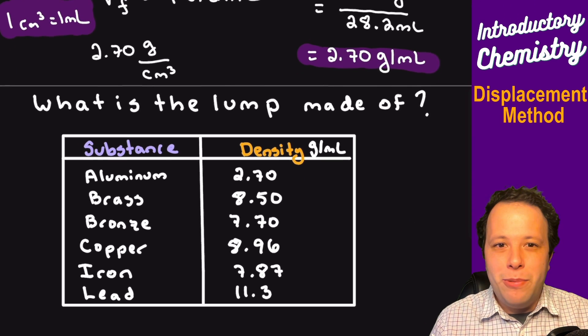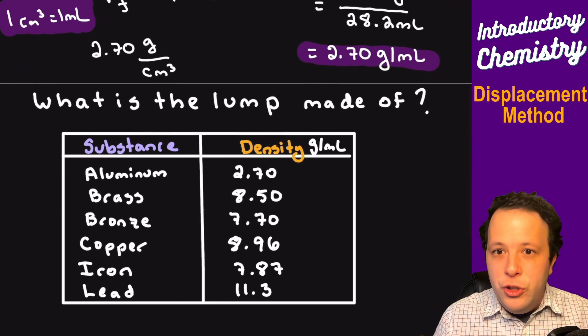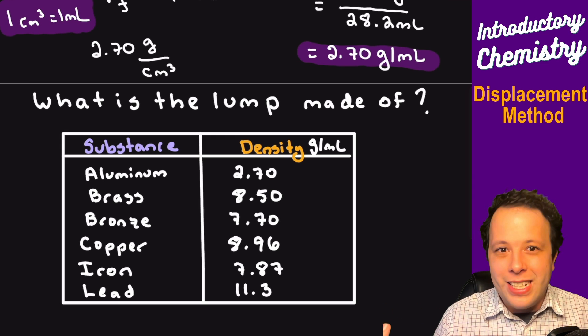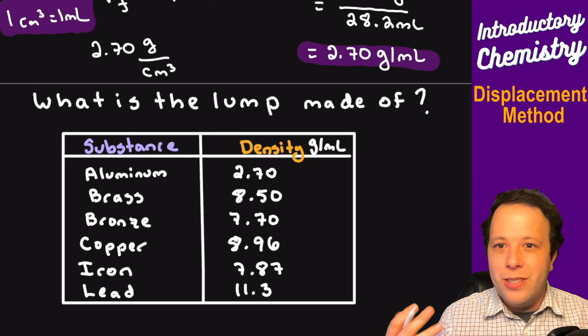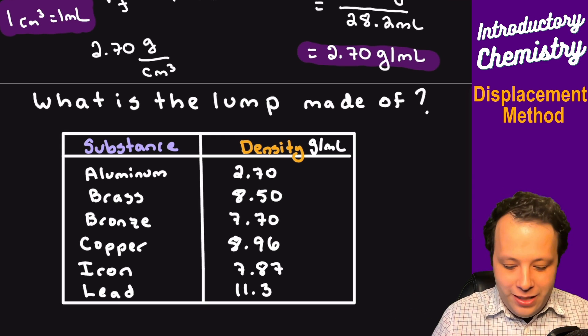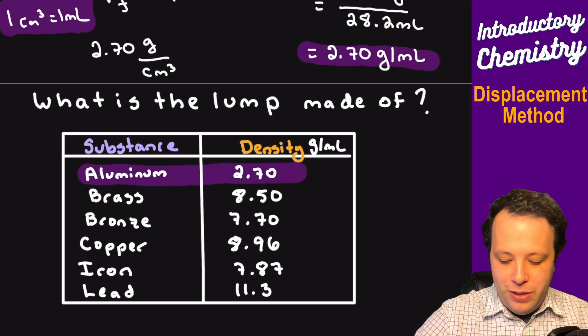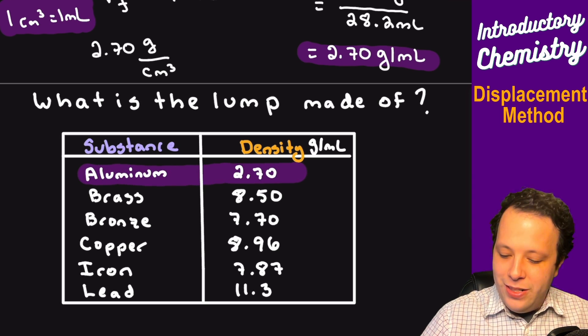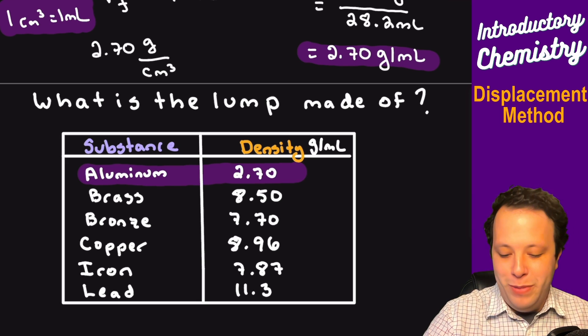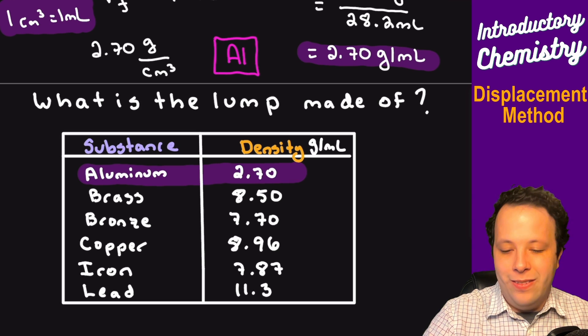So here I put a list together of common metals that you usually find in most labs that are easily accessible. So we want one that's around 2.7 grams per milliliter, and what you will see is aluminum is 2.7 grams per milliliter. So that means that our lump of material is aluminum and that would be our final answer. And that's how you can use displacement method to help you.